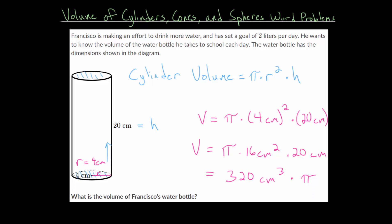If we want an exact answer to this, then the volume is just 320 times pi cubic centimeters. But if we want to get an approximate answer, we can say that pi is approximately 3.14. So if we plug that in, what we get for our volume is 1004.8 cubic centimeters.